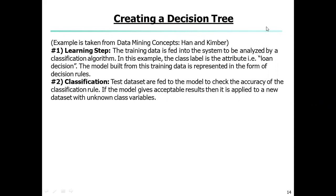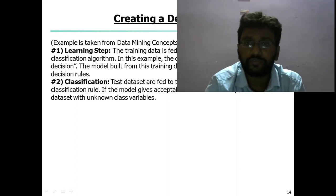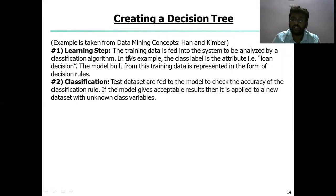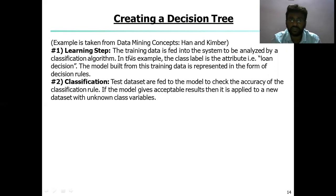For example, if the class label is the attribute — that is a loan decision — which is related to banking data. The model, based on training data, is represented in the form of decision rules, and each step will be followed by these decision rules. After the learning step, the data moves to the classification step where the test data set is fed to the model to check the accuracy of the classification rules. If the model gives accepted results, then it will apply to the new data set with unknown class variables, supporting those with a minimum accuracy level and giving results for unknown classes.